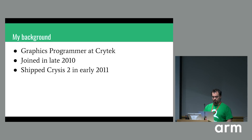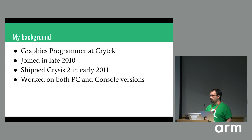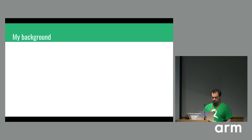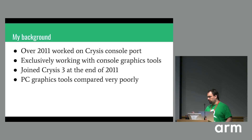A little bit about me and where I started. I was a graphics programmer at Crytek and I joined in late 2010. When I started I was working on Crysis 2, and we shipped that in early 2011. I was on PC and consoles — it was a simultaneous release — meaning Xbox 360 and PS3, that generation. After that I worked on the port of the first Crysis game to consoles, again PS3 and Xbox 360, working only with the console graphics tools.